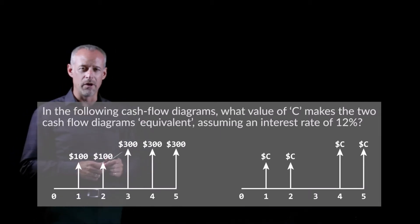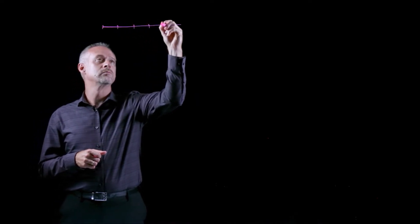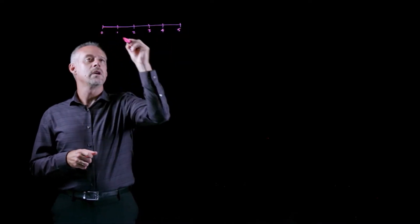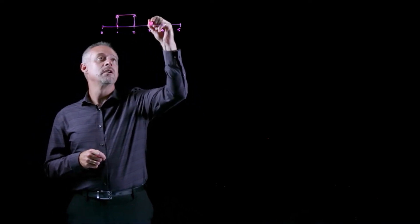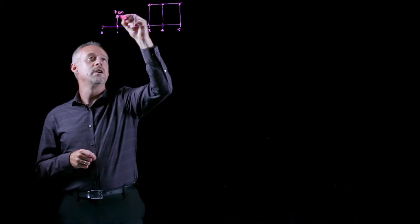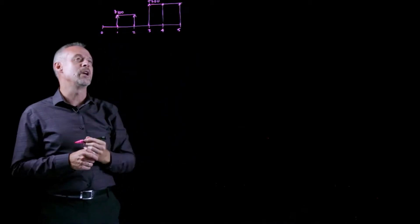This is a fun problem to test your time value of money calculation skills. In the problem, we're given two cash flow diagrams, and I'll recreate the cash flow diagrams here. We have a time frame of five years. In the first cash flow diagram, we're given positive cash flows of two different repeating values. I'll just draw them like this. This is $100, and this is $300. Three payments of $300, two payments of $100.